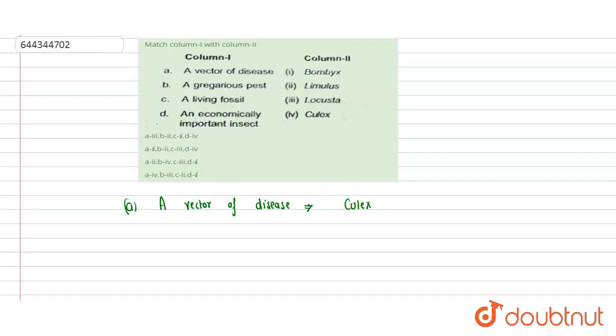Culex is a vector of disease. Vector means it helps in transmission of the disease. Culex acts as a vector for various important diseases, mainly the West Nile virus. It helps in transmission of disease caused by West Nile virus, Japanese encephalitis.